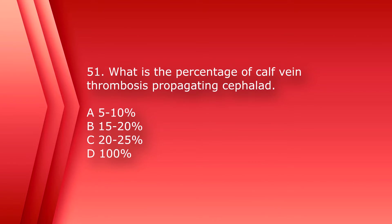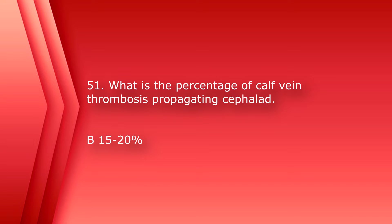Number 51: What is the percentage of calf vein thrombosis propagating cephalad, or towards the heart? A) 5 to 10 percent, B) 15 to 20 percent, C) 20 to 25 percent, or D) 100 percent. The answer is B, 15 to 20 percent.